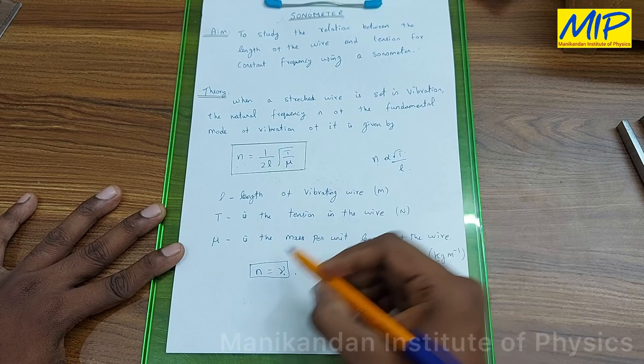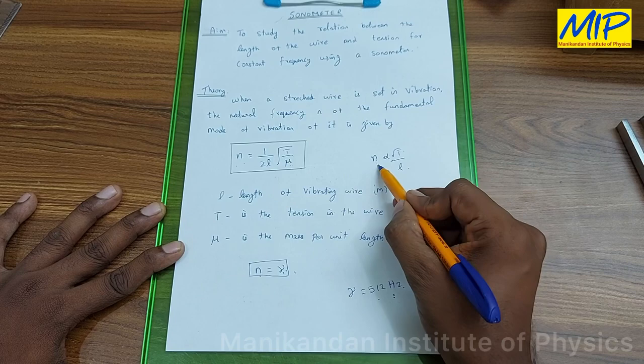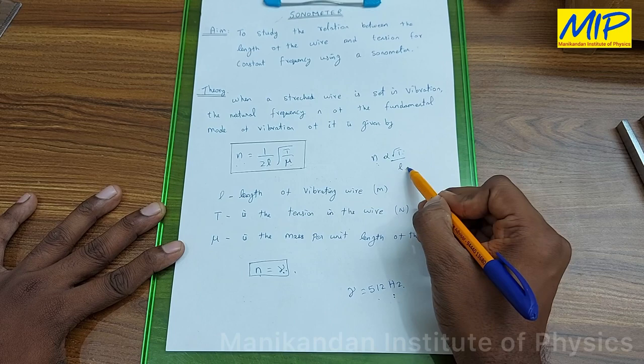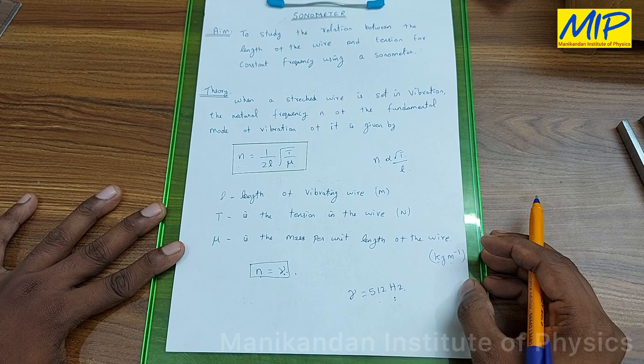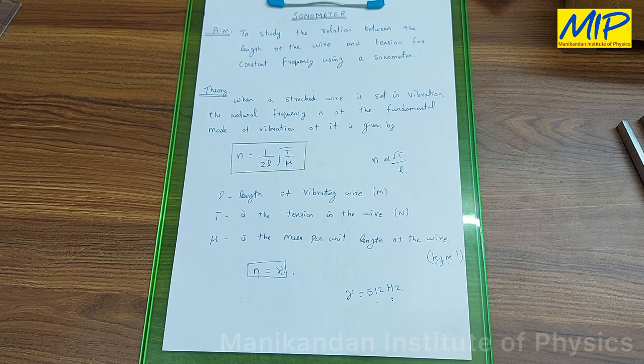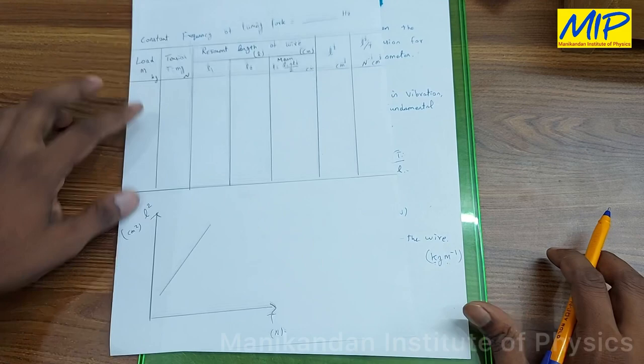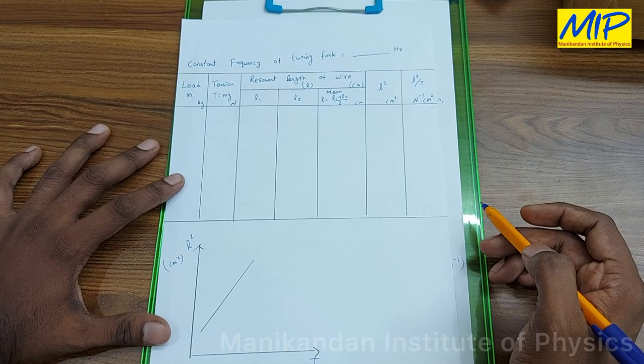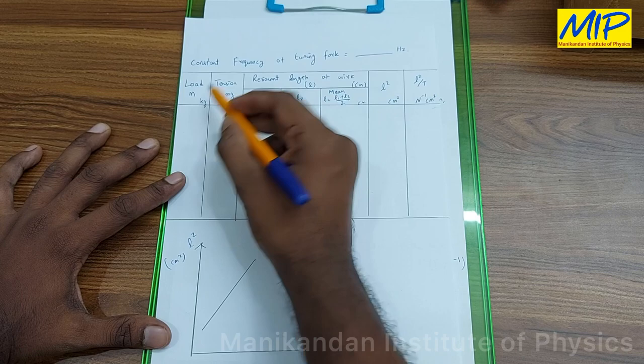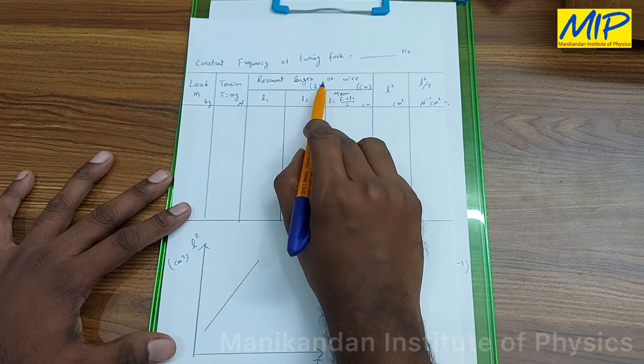μ is fixed, but I can vary the frequency value by varying the tension as well as the length. By varying tension and length I am going to find the resonance condition. I will use a table to vary the L and T values. For each observation, the load has mass m and tension equals m × g, and L is the resonant length of the wire.